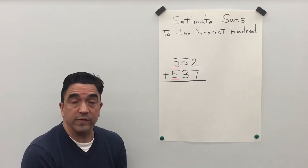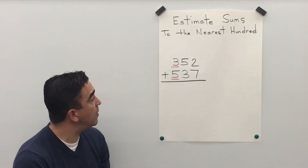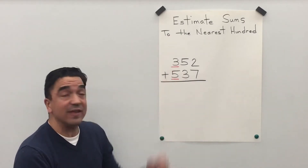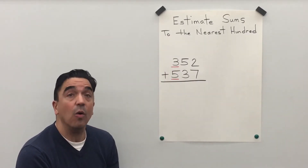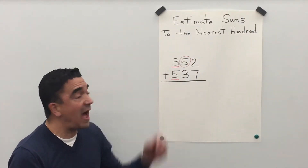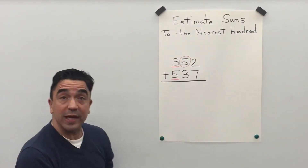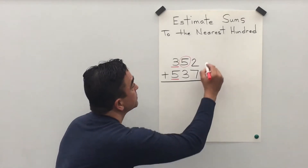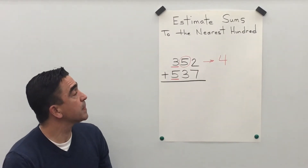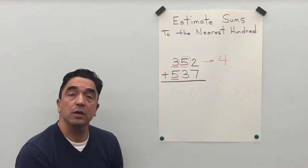The first thing we're going to do is round. 352 — I noticed the 3 is in the hundreds place and the 5 in the tens place is going to tell the 3 what to do. The 5 is going to tell the 3 to go up, so the 3 is going to become a 4. And all the digits after, which is 2, are going to become 0.